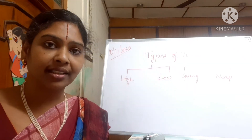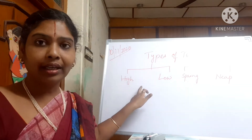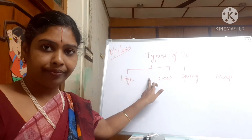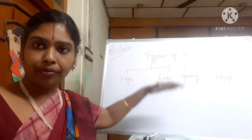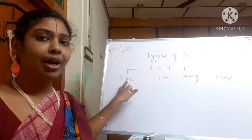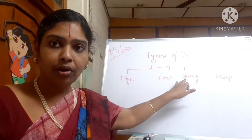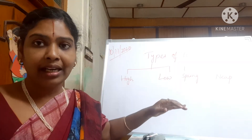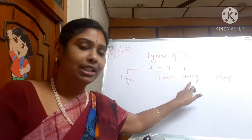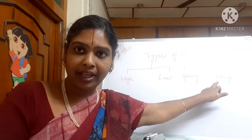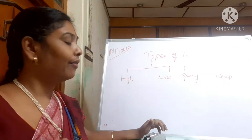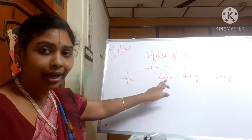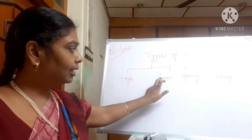Now let's see the types of tides. Based on the level of water — the altitude or height of water — tides are divided into high tide and low tide. Based on the magnitude of water — how much water is being displaced — tides are divided into spring tide and neap tide. When the level of water is highest, it is known as a high tide, and when the level of water is lowest, it is known as a low tide.